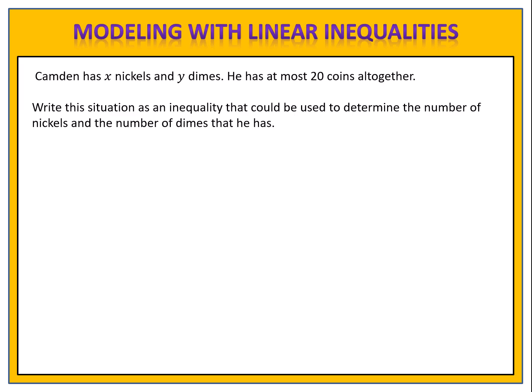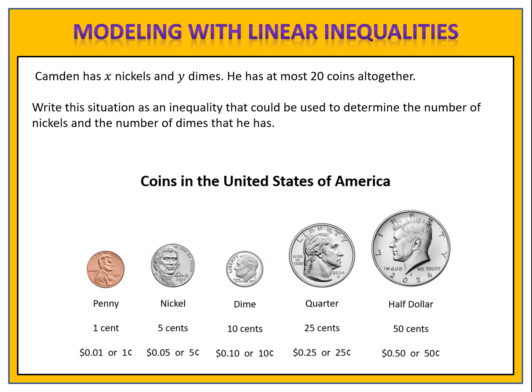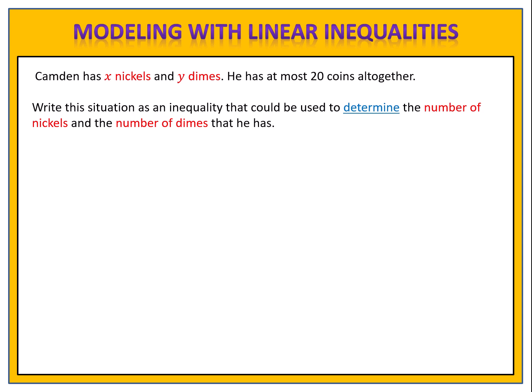This is a problem involving money, and the coins used are the currency in the United States of America. We have five coins that we use primarily: the penny, the nickel, the dime, the quarter, and the half dollar. Here Camden has X nickels and Y dimes — X and Y represent some quantity. Notice the word 'determine' — it will help you define your variables clearly. We want to determine the number of nickels and the number of dimes that he has. So X represents the number of nickels, and Y represents the number of dimes. It's important to be specific — X is the number of nickels, and Y is the number of dimes.